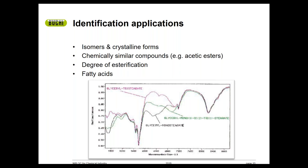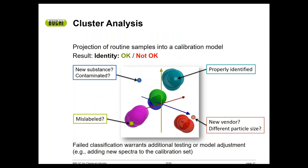NIR has shown usefulness in common applications such as differentiating isomers in crystalline forms of materials, chemically similar compounds, and various fatty acids as examples. The backdrop to how the identity test is being conducted is called cluster analysis.